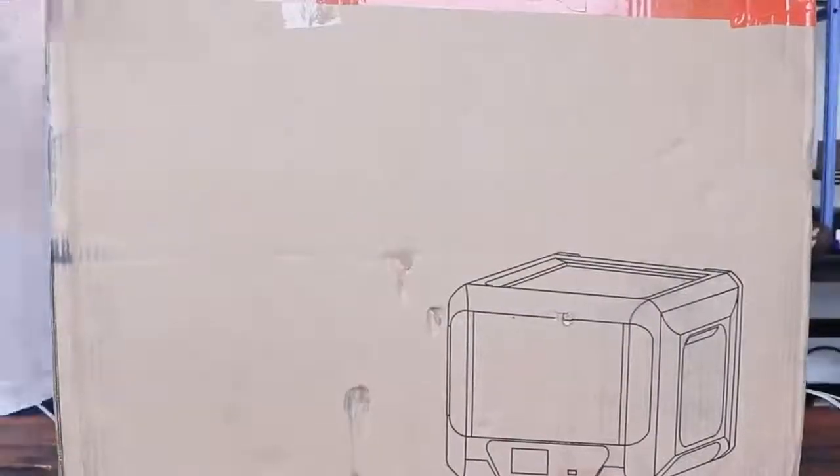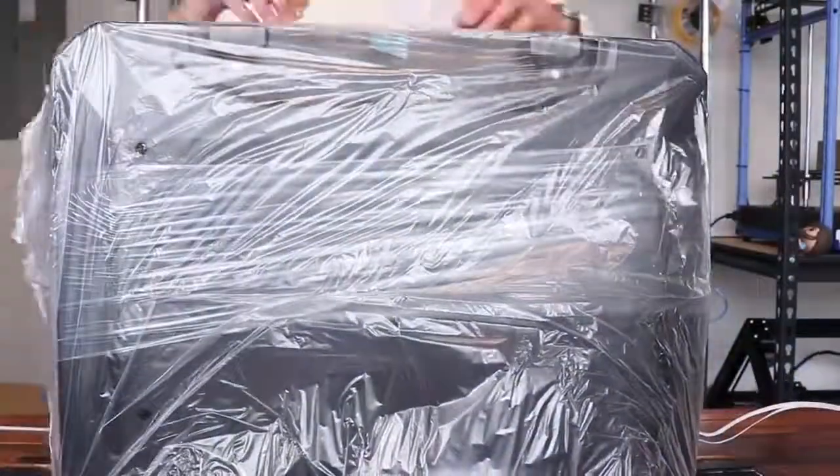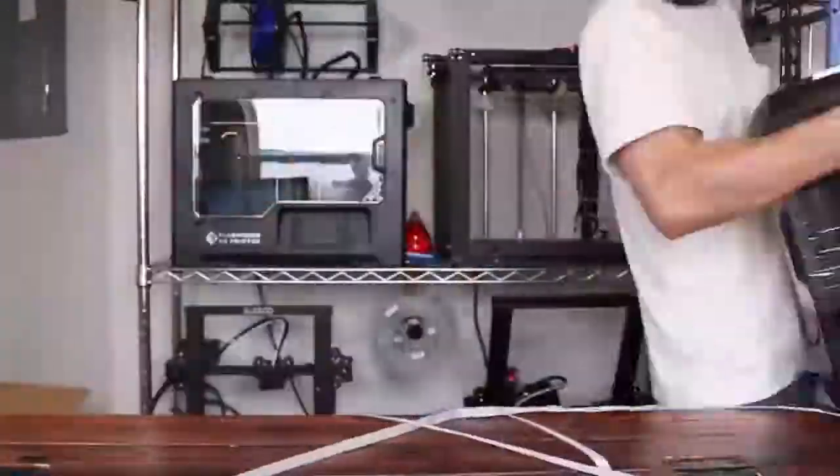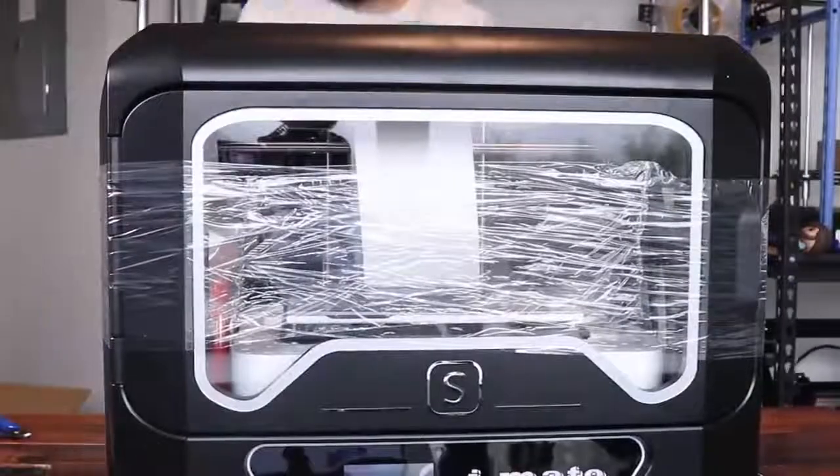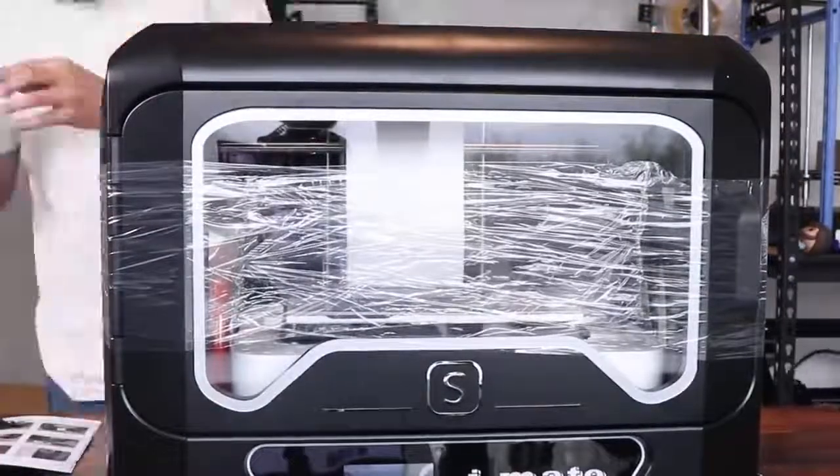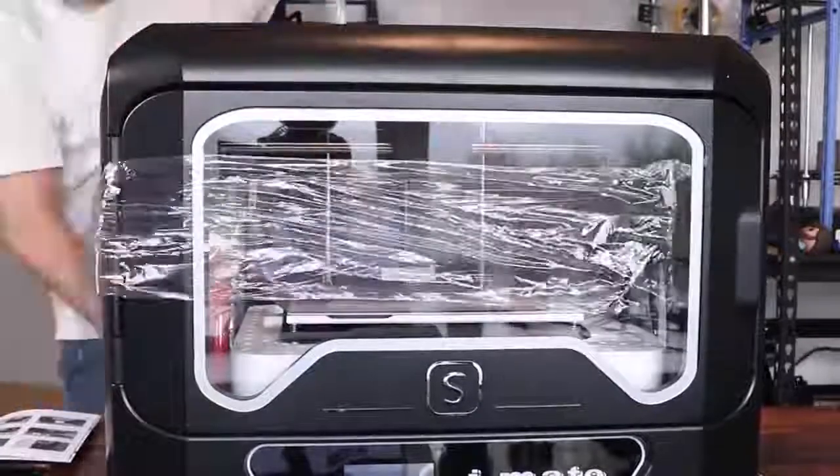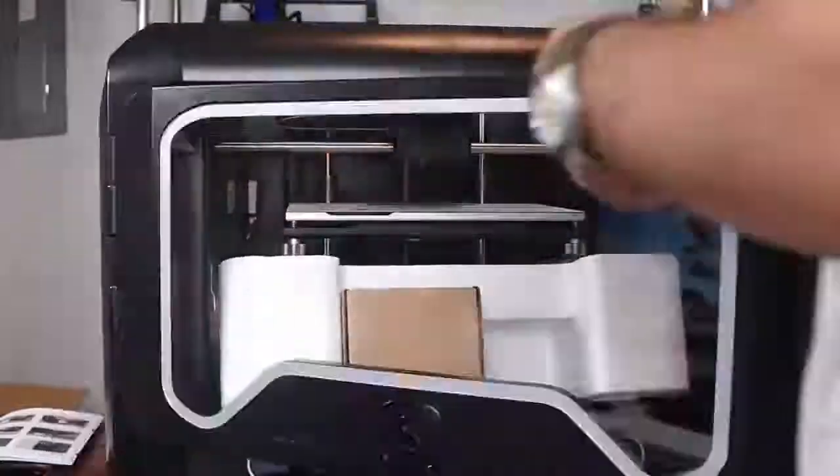This printer is a pretty large enclosed printer, being a decent amount bigger than those FlashForge Creator Max machines I reviewed. The iMate has a build volume of 270 by 200 by 200 millimeters. While that's smaller than many other machines out there, since it's entirely enclosed it does take up a bit more of a footprint than if it weren't enclosed.